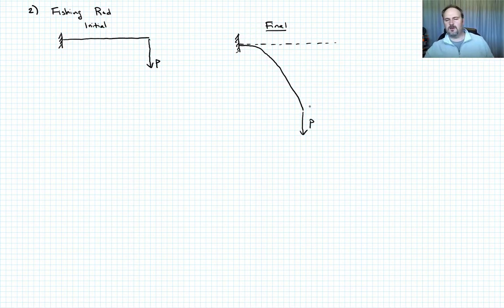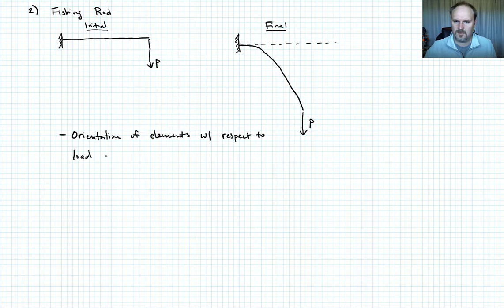So in the final configuration, I'm going to draw what we had originally. This is the rod before deformation, and I'm going to exaggerate this for effect, but this is the rod after deformation, still being applied with a load of P. So what do I want to say here? You would never expect this sort of a configuration in the initial to generate the same type of stresses throughout the rod as this type of configuration where the rod is now beginning to align with the load. So what's changing is how the elements are oriented relative to the load. So the orientation of the elements with respect to the load changes during loading.